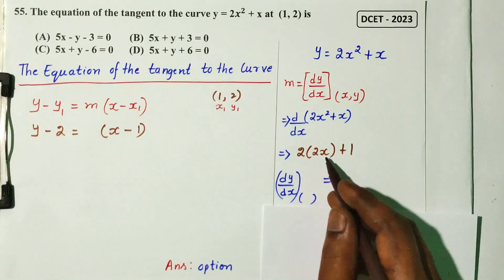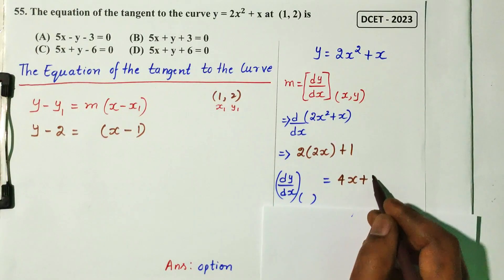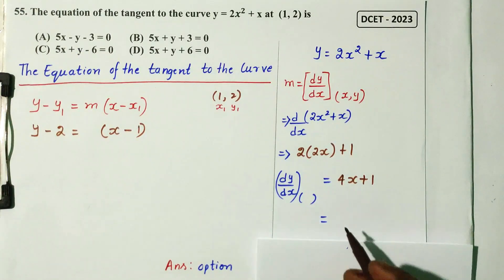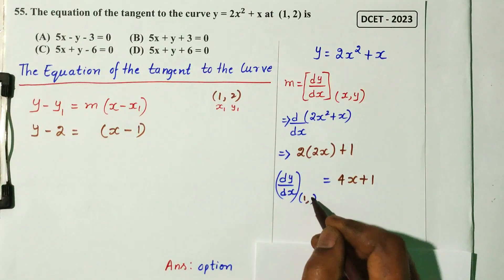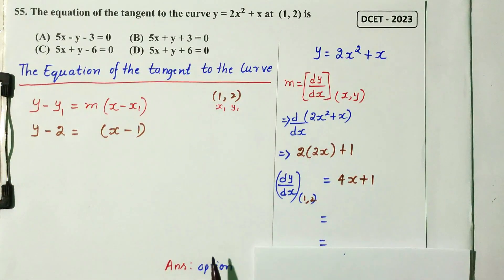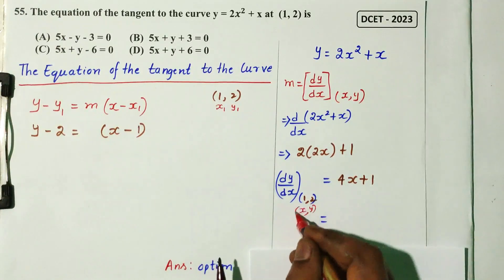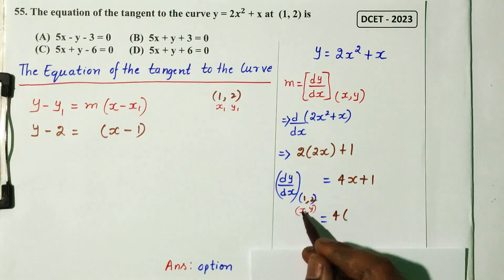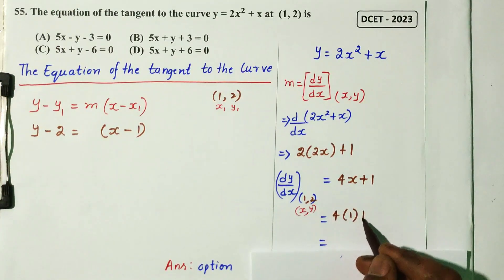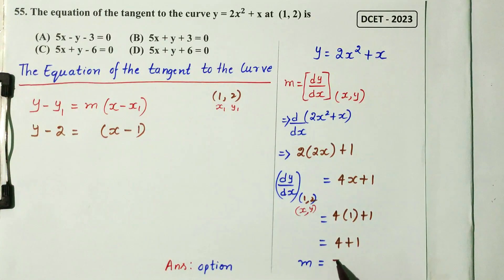Differentiating y = 2x² + x gives dy/dx = 4x + 1. Substituting x = 1 at the point (1, 2): slope m = 4(1) + 1 = 5.